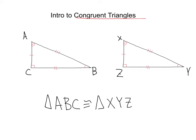Now the order you put these letters is very important when dealing with congruent triangles, because you want them to match with their corresponding angles and sides. For example, point A goes first and point X goes first, which means A should be congruent to X. And if we look, we've got two congruent marks at A and two congruent marks at X — so that's true.